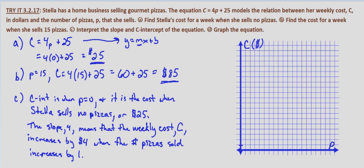We'll make each tick mark equal to 5, so 10, 20, 25. C at P equals 0 we determined is 25. We put one mark there — this is the point (0, 25), our C-intercept.